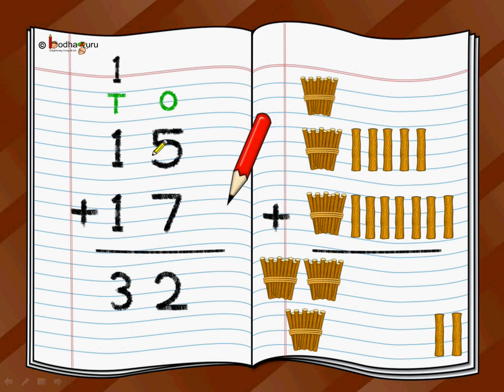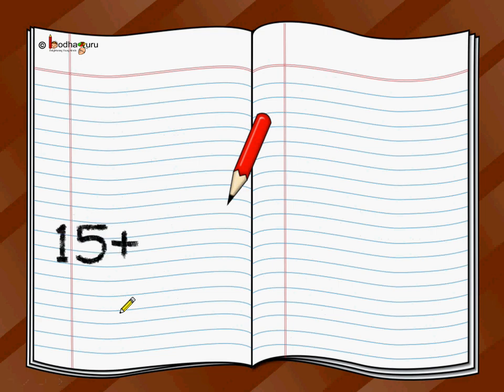So what we have done is we did 5 plus 7, it was 12 as it was more than a single digit. So we kept the ones position that is in the 12, we kept 2 here and moved the 1 on the top in the tens position. And then we added the tens position, 1 which was carried over from this position to this position. So 1 plus 1, 2, 2 plus 1, 3. So we write 15 plus 17 is equal to 32.